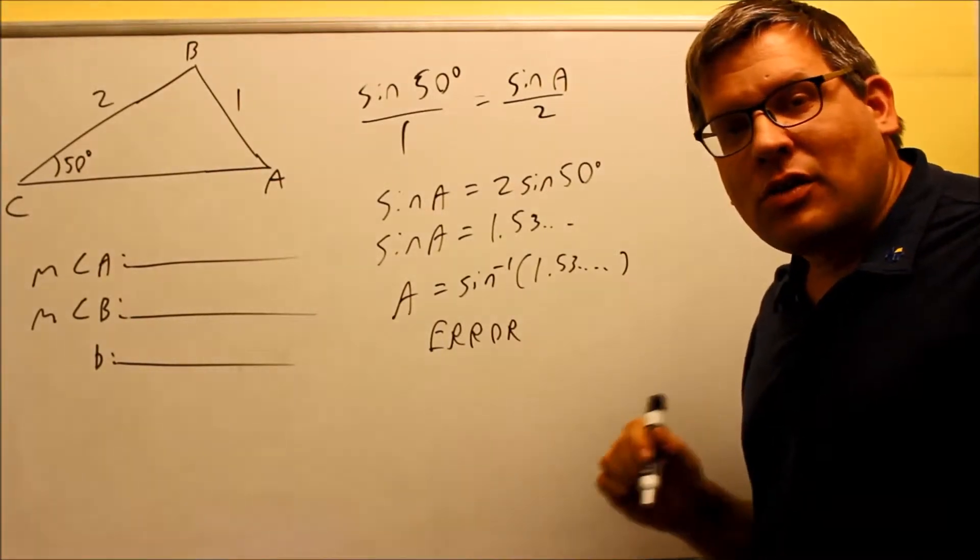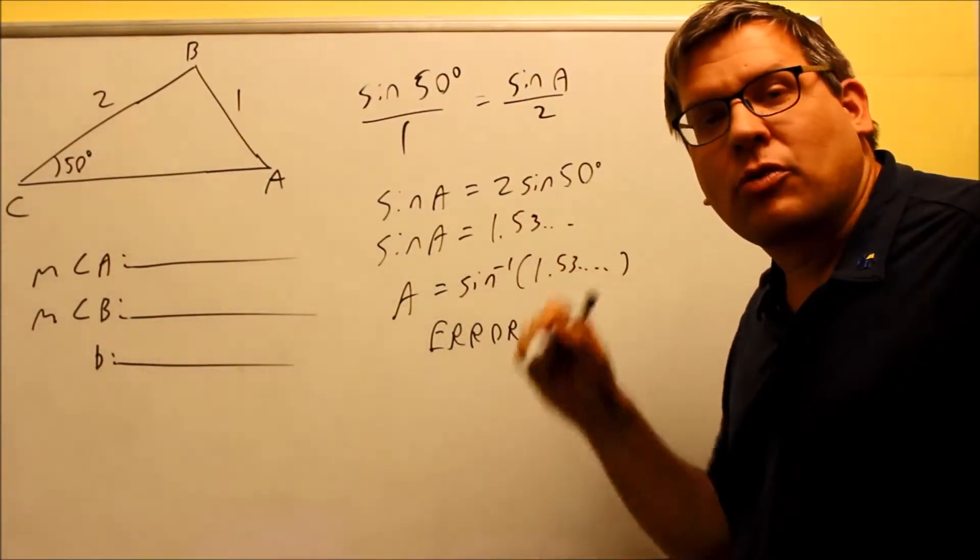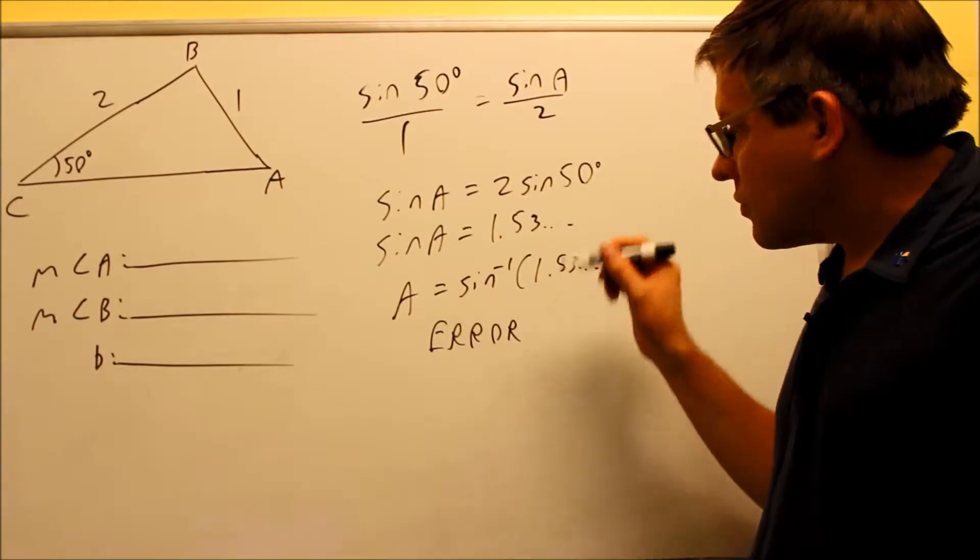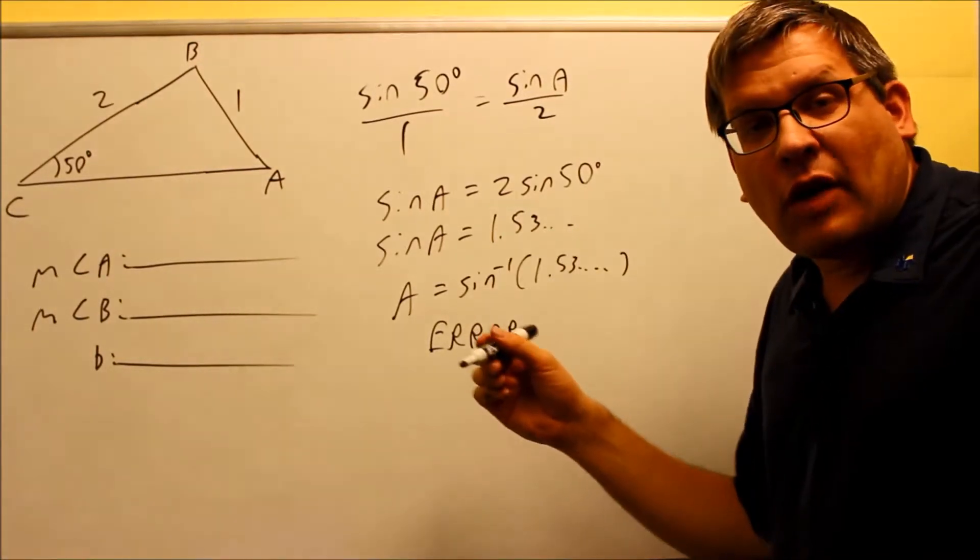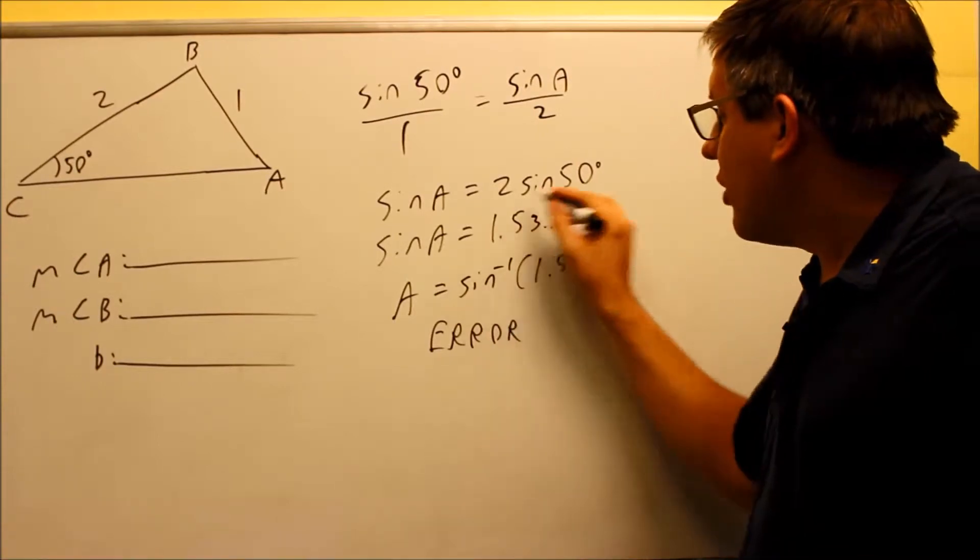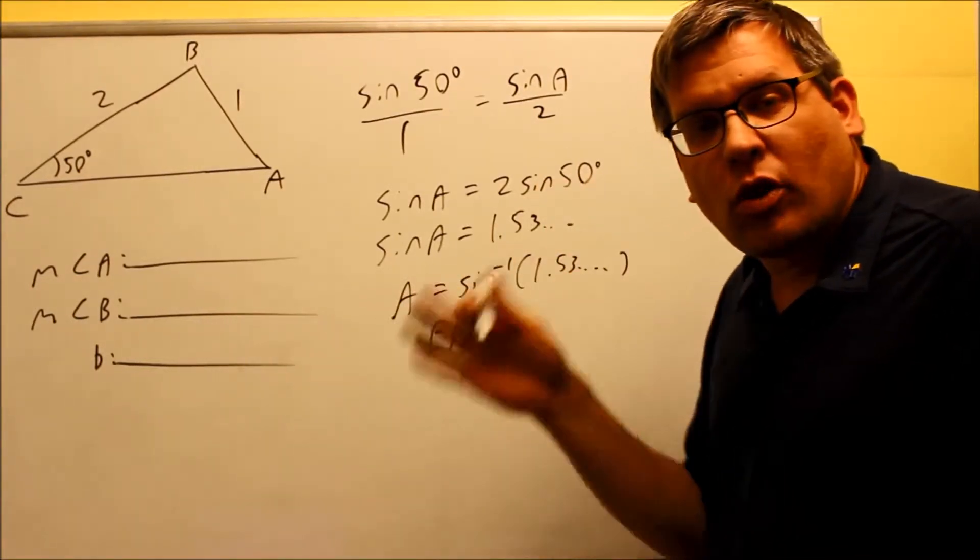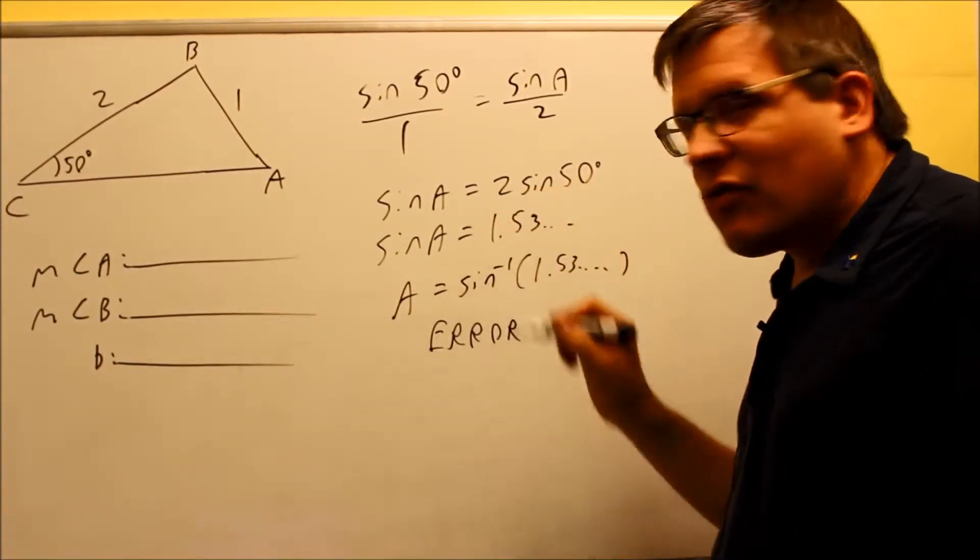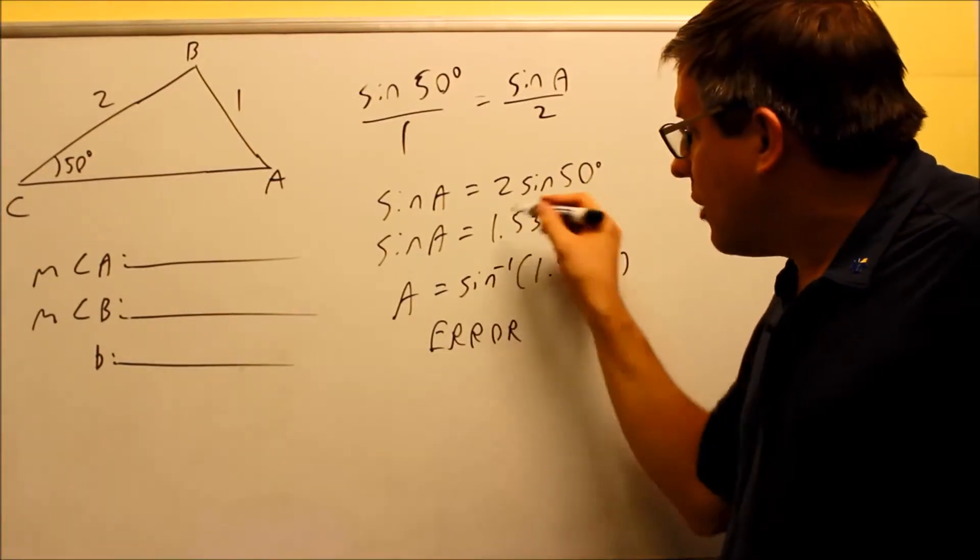In previous sections, we talked about that your sine and cosine come from the unit circle. Well, unit circle, the largest value you could have is 1, and the smallest value you can have is negative 1. So this value here does not fit between negative 1 and 1. Well, then that means that that value is not actually on the circle, we're not able to get a value for it.